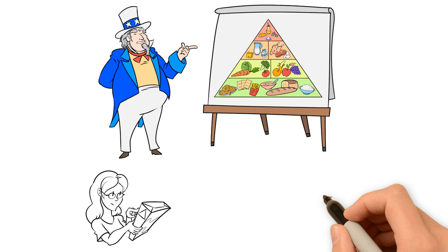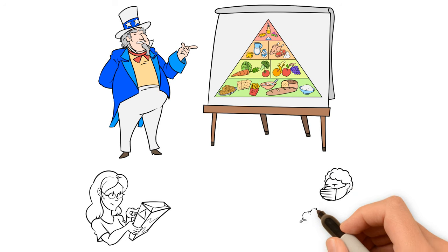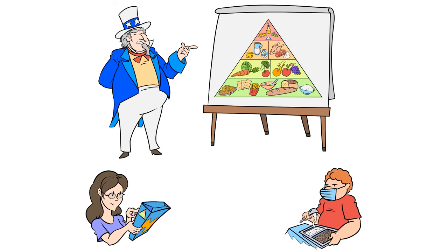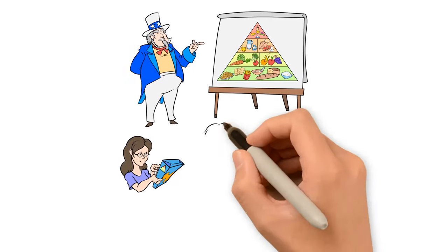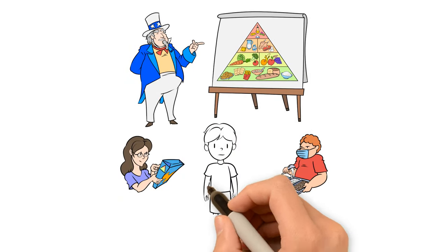A decade after it was unveiled, a Gallup survey found that 82% of Americans believed the pyramid was the key to healthy eating. Parents across the country looked to it as a guide to feeding their families. With so many people religiously following the food pyramid, how could obesity rates climb?